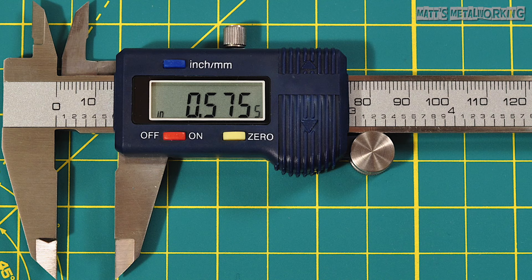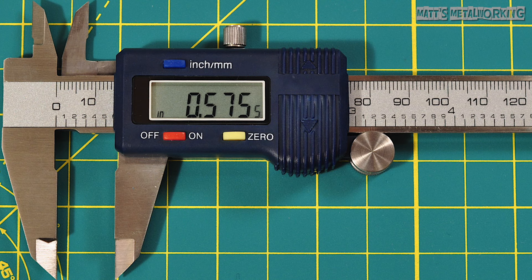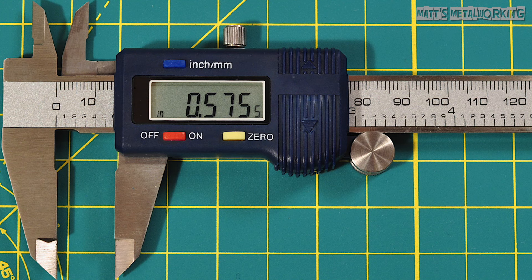This particular caliper will provide accuracy up to five tenths of a thou or 0.0005. Our first measurement is 0.5755 or 575 thousandths and five tenths of an inch.